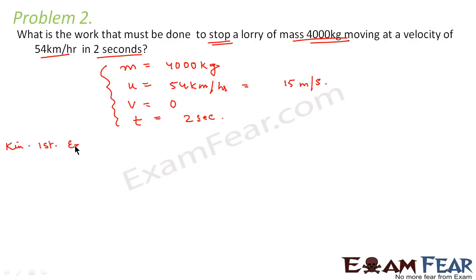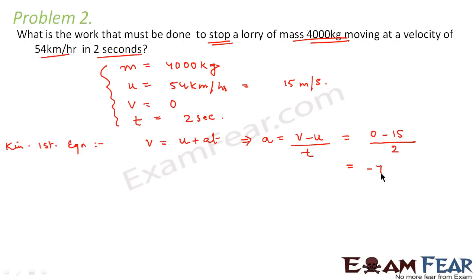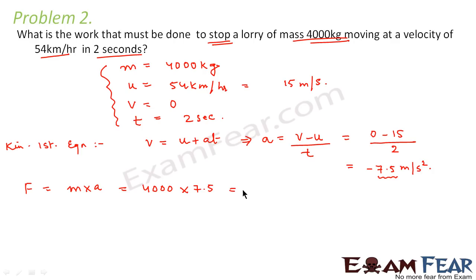Using the first kinematic equation: V = U + At, so A = (V − U) ÷ t = (0 − 15) ÷ 2 = −7.5 m/s². The vehicle is retarding so acceleration magnitude is 7.5 m/s². Force = mass × acceleration = 4000 × 7.5 = 30,000 N.